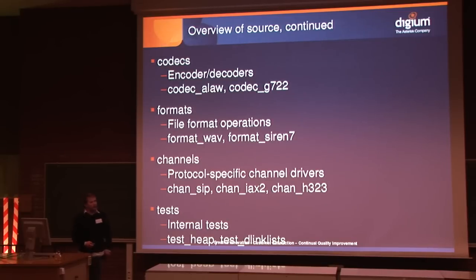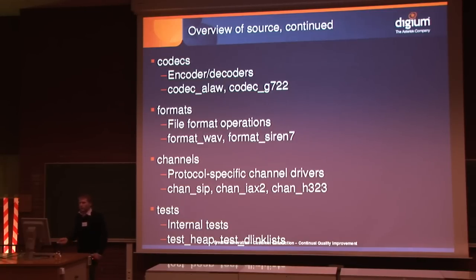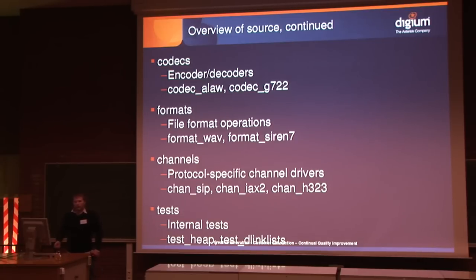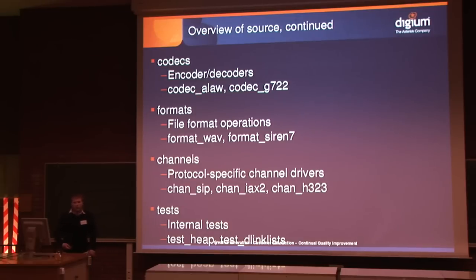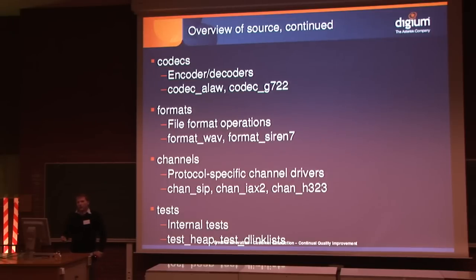The next two directories can be kind of confusing because they seem similar. You have codecs, which are encoder/decoder modules for specific audio formats — for instance, here in Europe, codec A-law is probably the most commonly used for telephony, and higher-end codecs like G.722 are also defined here. The formats directory, on the other hand, deals with file format operations — so if you have a WAV file and you want to read a frame of audio from it, that's handled by the format module.